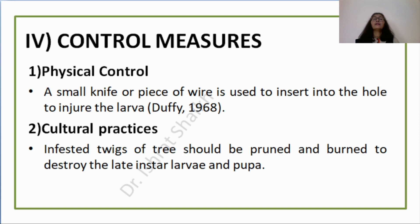Control measures: there are different methods. The first is physical control — a small knife or piece of wire is inserted into the hole to injure the larva. This can be done only if the branch is small and the larva is not too deep; a wire can reach deeper larvae.